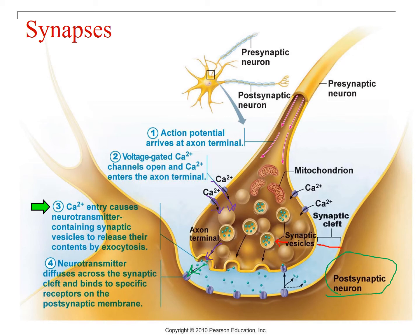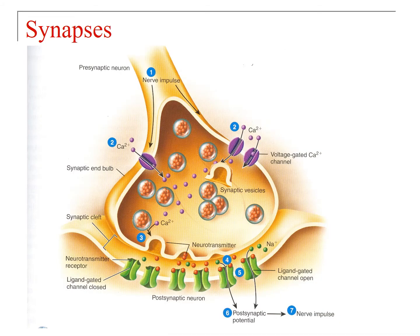The postsynaptic neuron is the neuron receiving the signal; the presynaptic neuron is sending the signal. The neurotransmitter diffuses across the synaptic cleft and binds to specific receptors on the postsynaptic membrane. In another depiction: first, the nerve impulse comes down the axon; second, calcium enters the cell; third, the synaptic vesicle merges with the cell membrane and sends contents into the synaptic cleft, where neurotransmitters bind to receptors on the postsynaptic neuron.